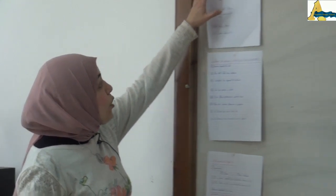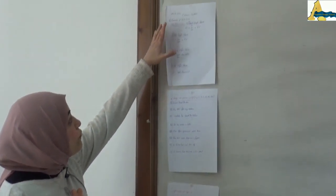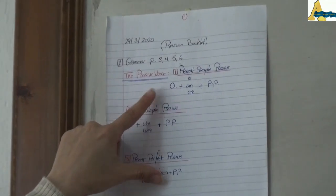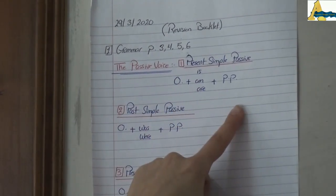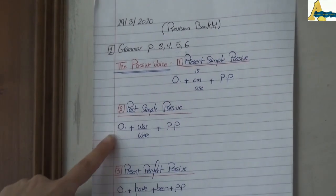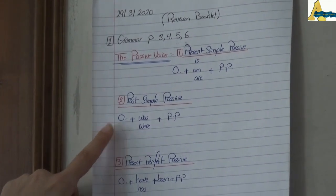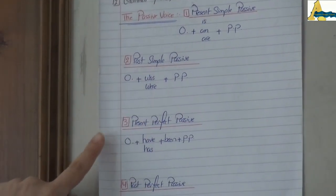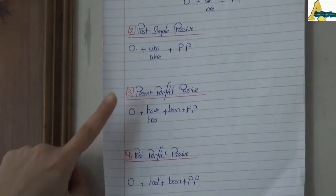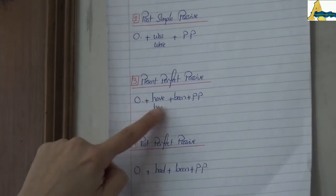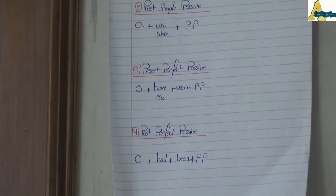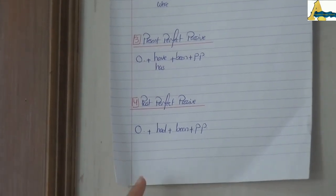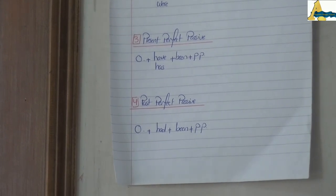In passive voice, we have taken four tenses. Present simple passive: object plus is/am/are plus past participle of the verb. Past simple passive: object plus was or were plus past participle. Present perfect passive: object plus have or has plus been plus past participle. Finally, past perfect passive: object plus had plus been plus past participle of the verb.